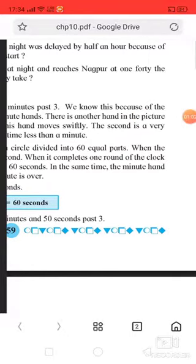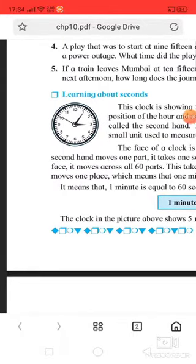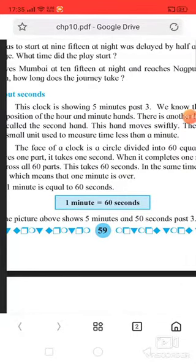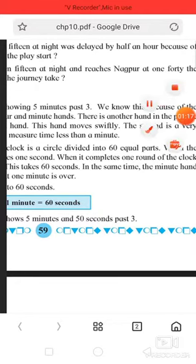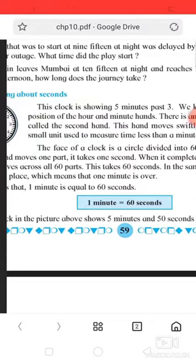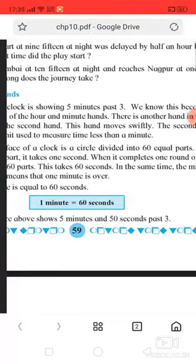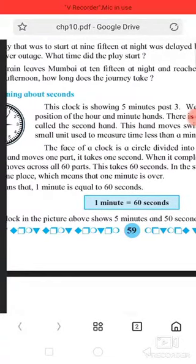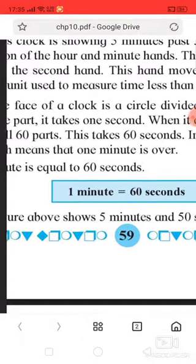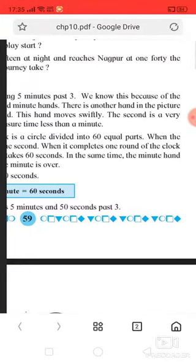There is another hand in the picture called the second hand. This hand moves swiftly. The second hand is a very small unit used to measure time less than a minute. The face of a clock is a circle divided into 60 equal parts.